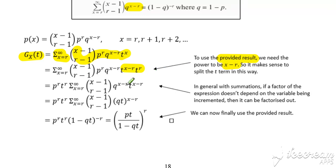So on the next line, we've taken out a factor of p^r·t^r. We've taken out the t^r and the p^r, and we can then combine the q^(x-r) and the t^(x-r) to give us (qt)^(x-r).